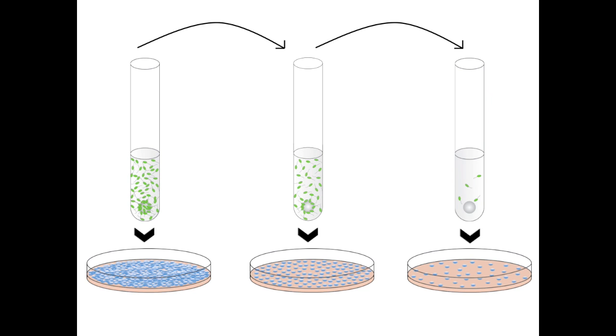Once you have completed your serial dilutions, you can now plate your bacterial culture on agar plates so that you can see individual colonies of bacteria on your agar plate.